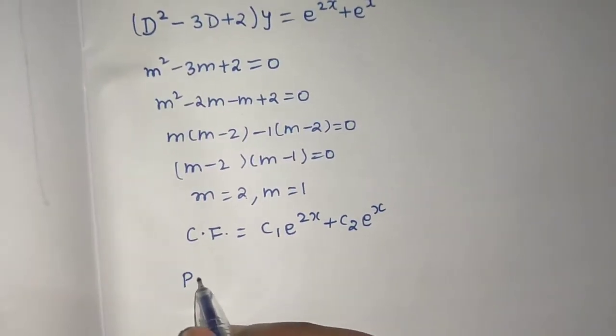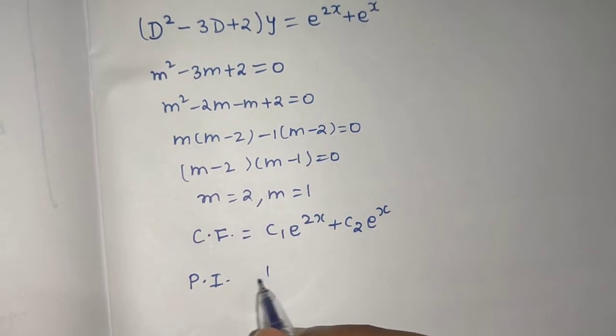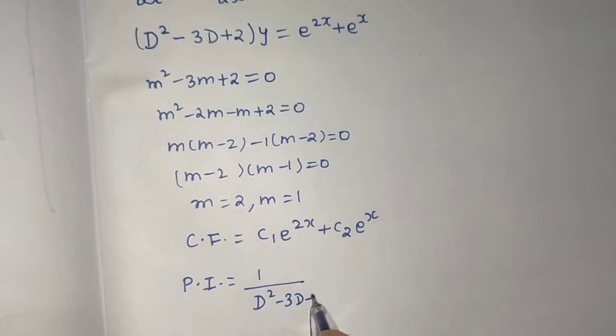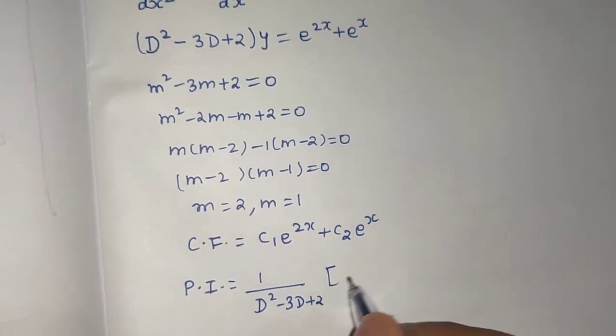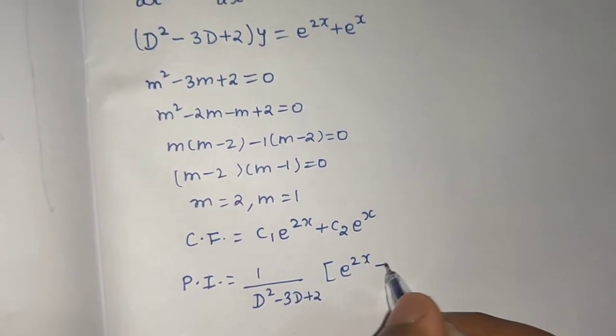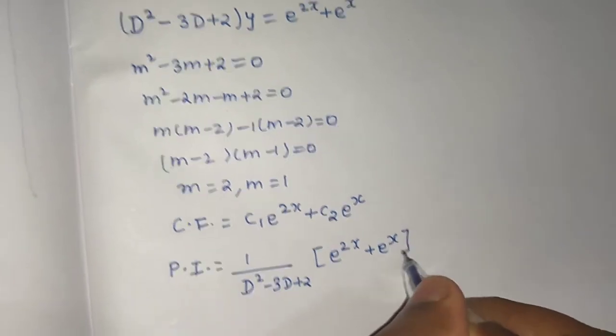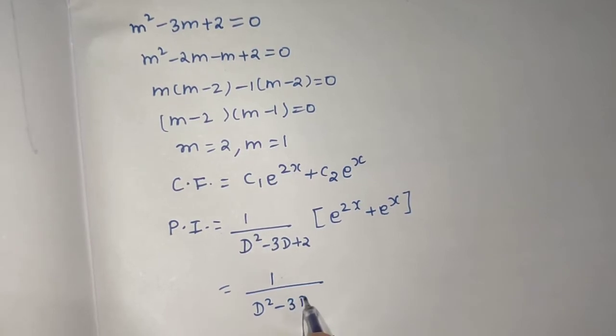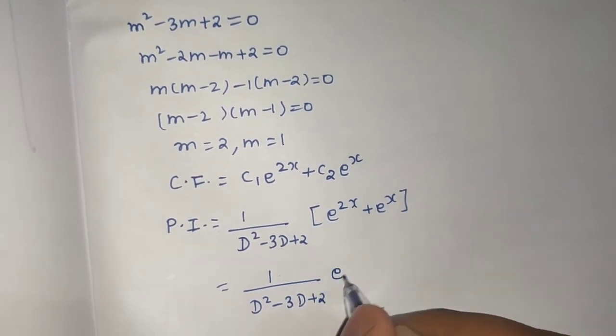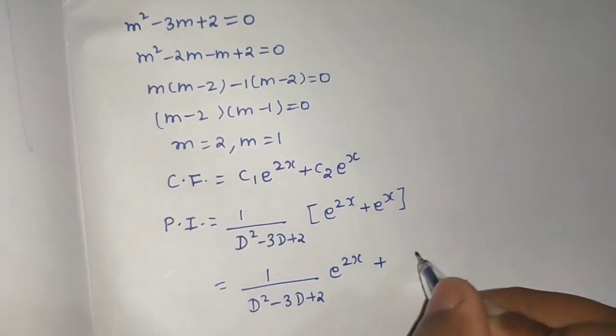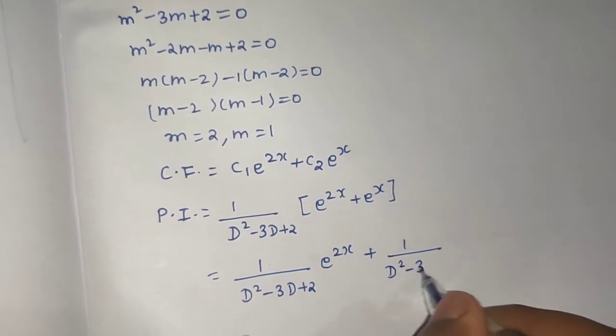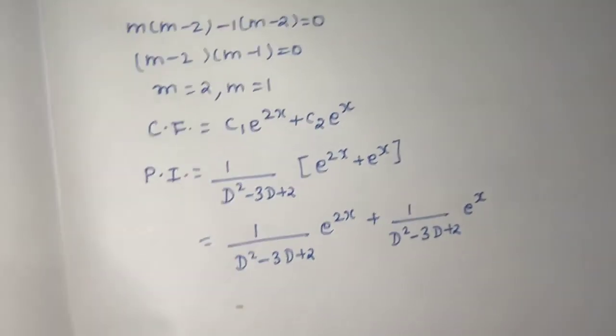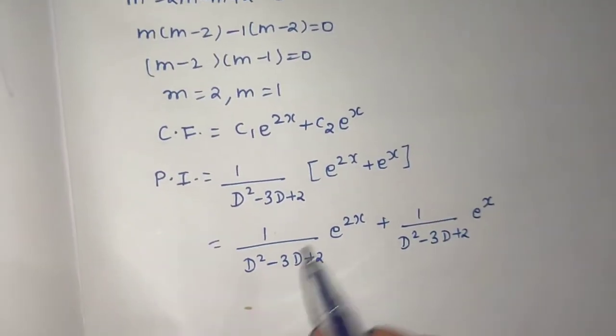Now moving ahead with the particular integral, which will be 1 upon F(D) operating on RHS. So this is 1 upon D² minus 3D plus 2 operating on e^x.